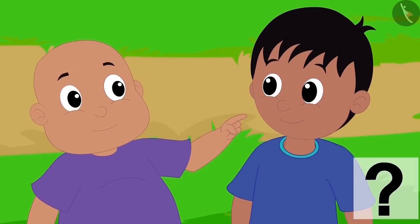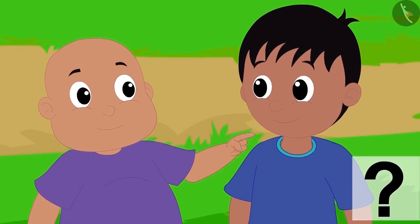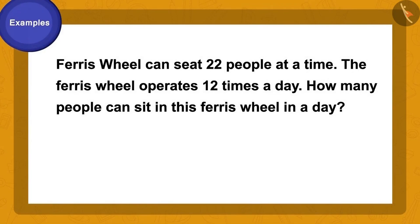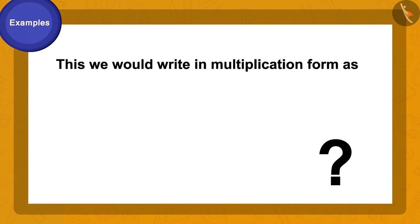Children, can you find the answer to Raju's question? At a time, 22 people can sit in it, and the Ferris wheel operates 12 times a day. How do we write this in the form of multiplication?